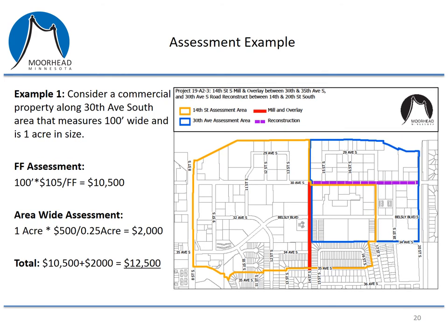For the first example, we can take a commercial property that is 100 feet wide, is one acre in total lot size, and is adjacent to 30th Avenue South, which is being reconstructed. The front footage assessment would be 100 feet multiplied by the reconstruction rate of $105 per front foot, for a total of $10,500. This property would also receive an area-wide assessment — it's a one-acre lot, so $500 per quarter acre means the area-wide assessment for 30th Avenue would be $2,000. The total assessment in this example would be $12,500.